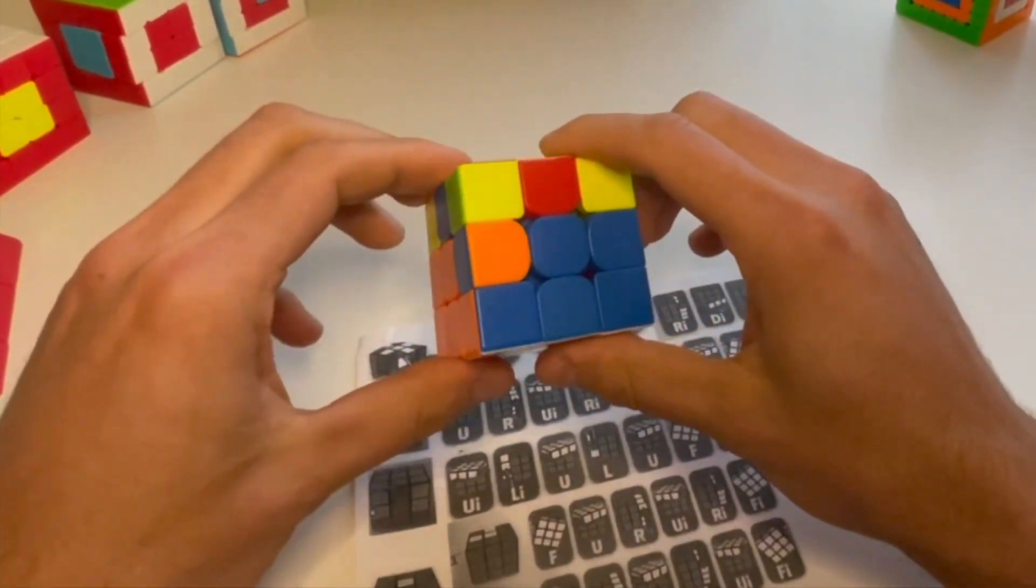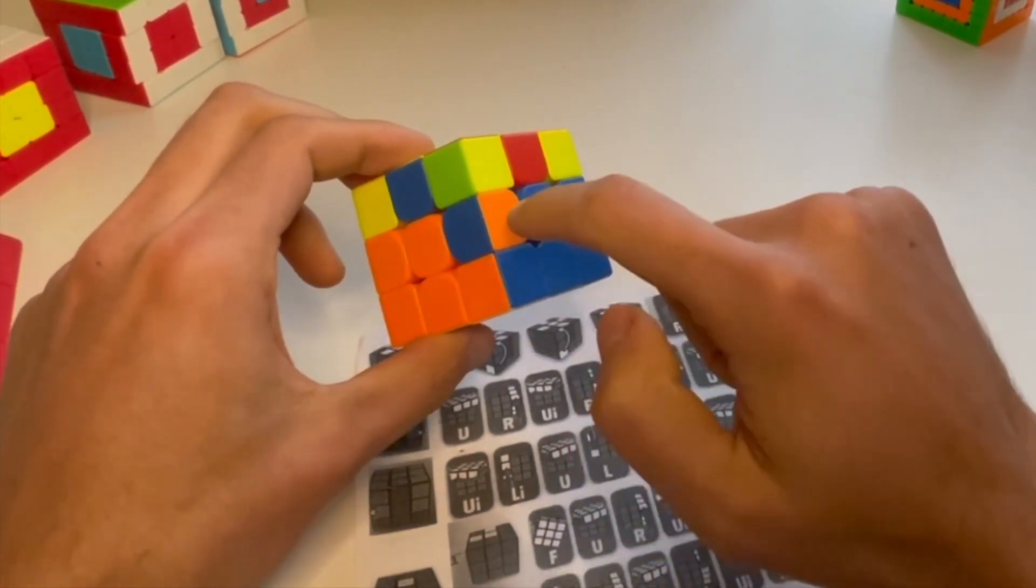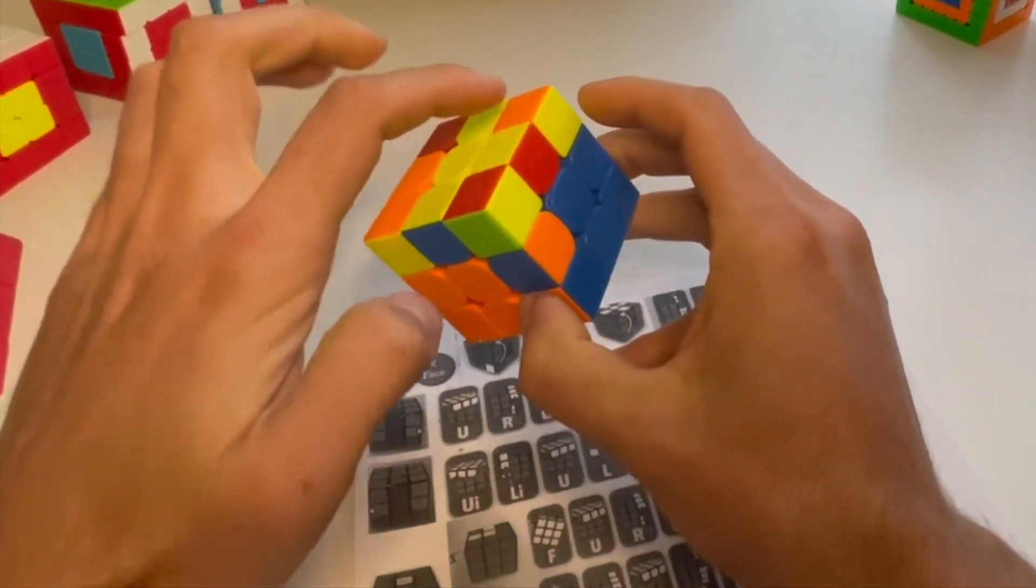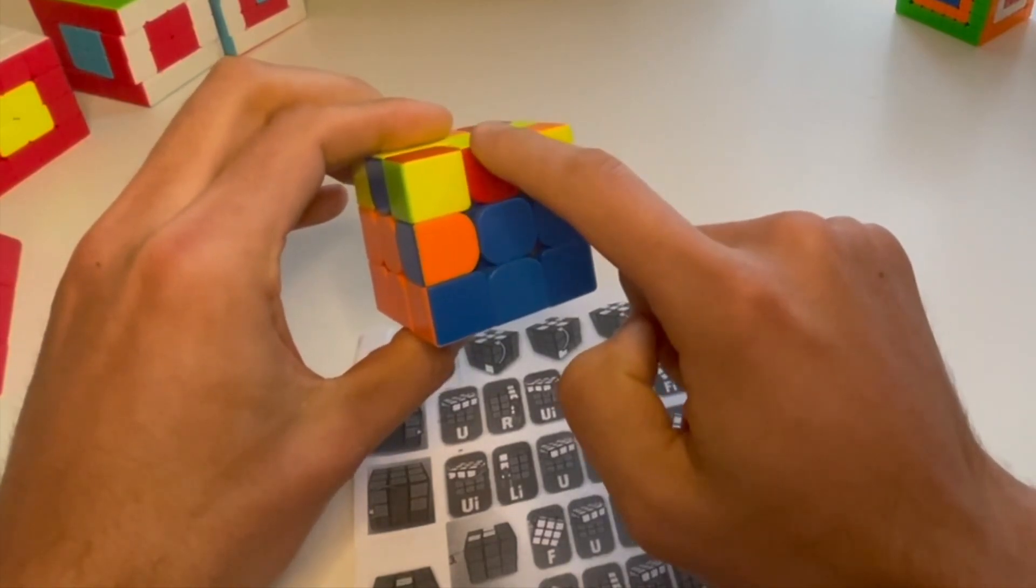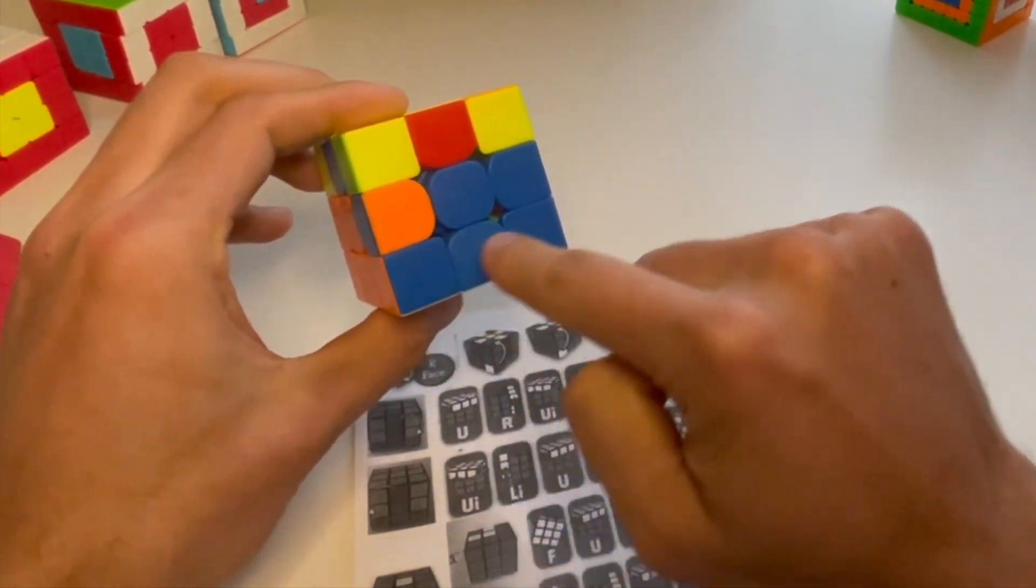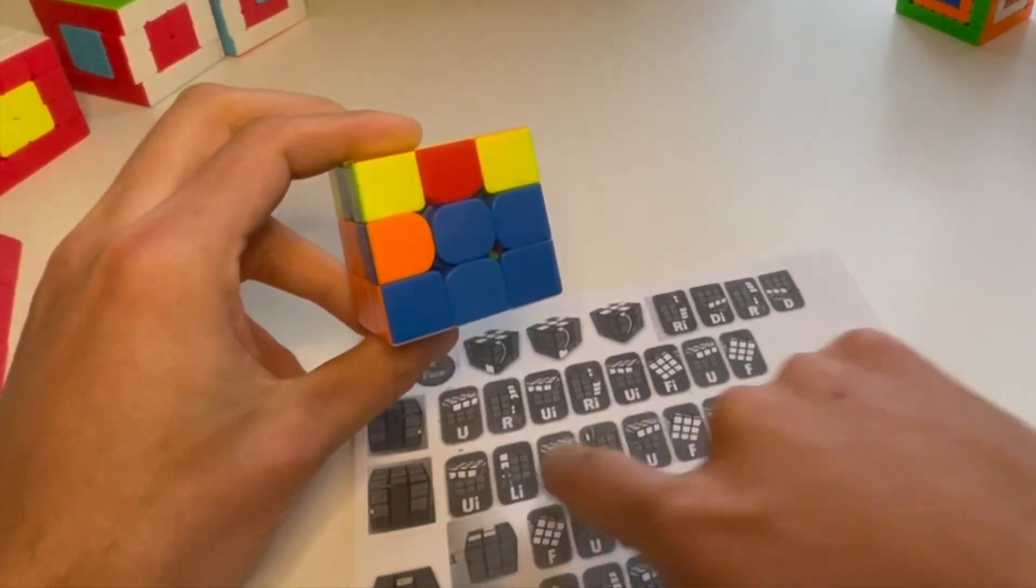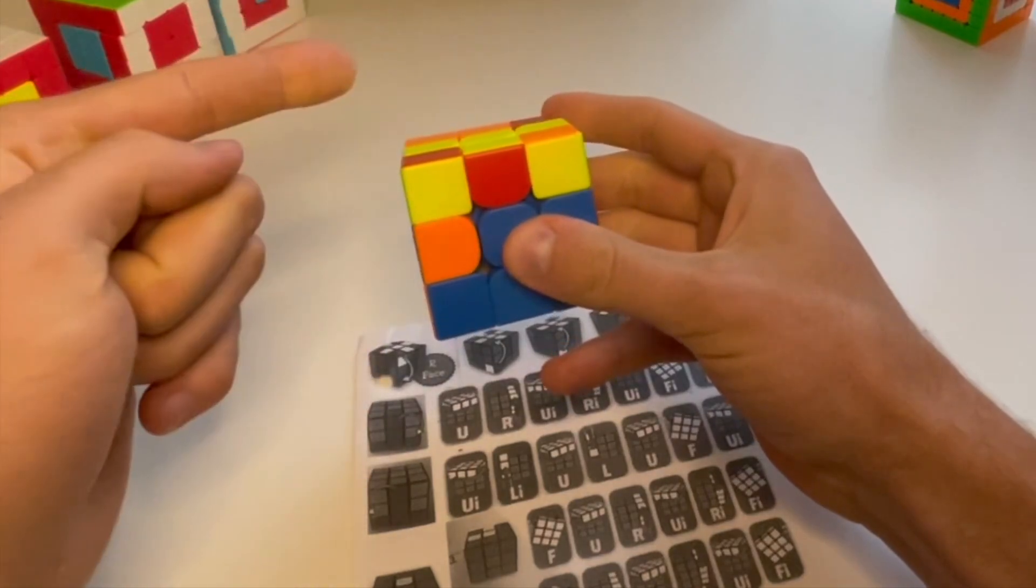One thing you may find here is you may find something like this where it's in backwards. It's in the right spot, just it's backwards. So what we're going to do is we're going to take any random piece up here and we're going to insert it into there. So for example, if I wanted to insert this in here, imagine I have my upside down T shape and I'm going to the right and I can follow this algorithm to bring that into there. And that will end up bringing this piece up to the top.